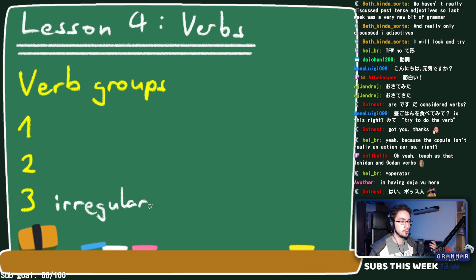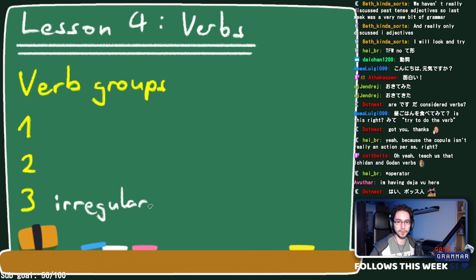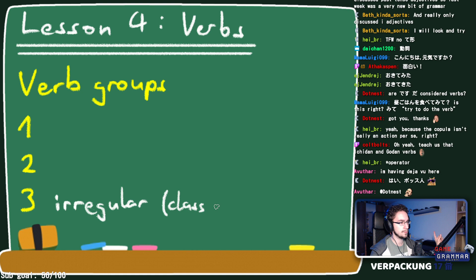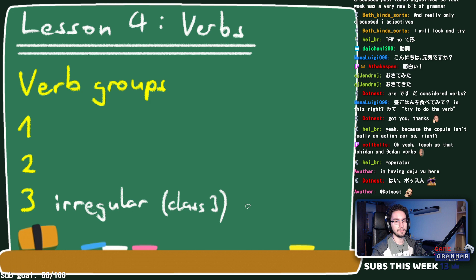Only two verbs have fairly irregular conjugations, and everything else falls into two neat categories in modern Japanese. For someone who's tried to learn French or German, you'll rejoice — only two irregular verbs. Other textbooks may call these 'class three' verbs, such as Genki, though I'm not 100% sure.